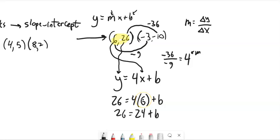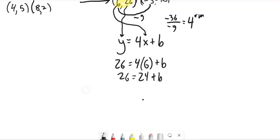And if I keep going to solve this, I can subtract 24 from both sides. 26 minus 24 is 2. So b is 2.